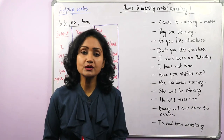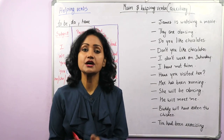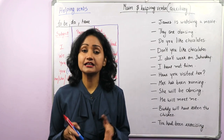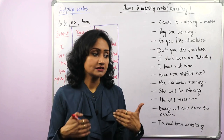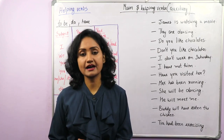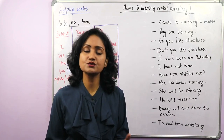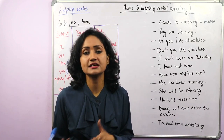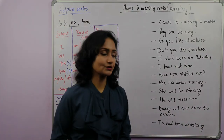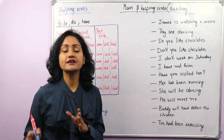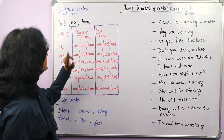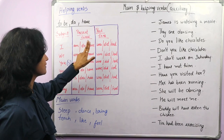Helping verbs are those verbs which help the main verb to complete a sentence. They are used for different kinds of sentences like negative, positive and interrogative. Whenever we have to make these kinds of sentences we need helping verbs. Three very important helping verbs are to-be verbs, do, and have.